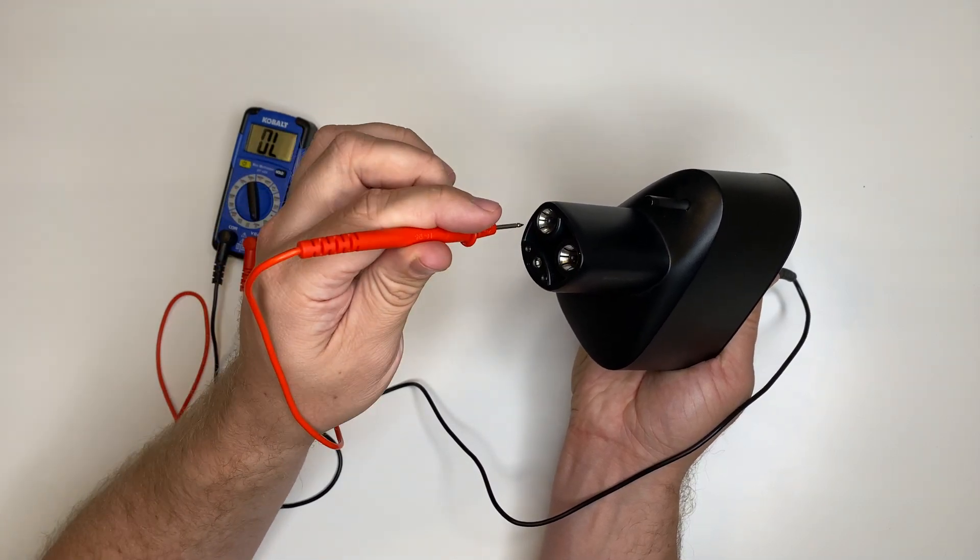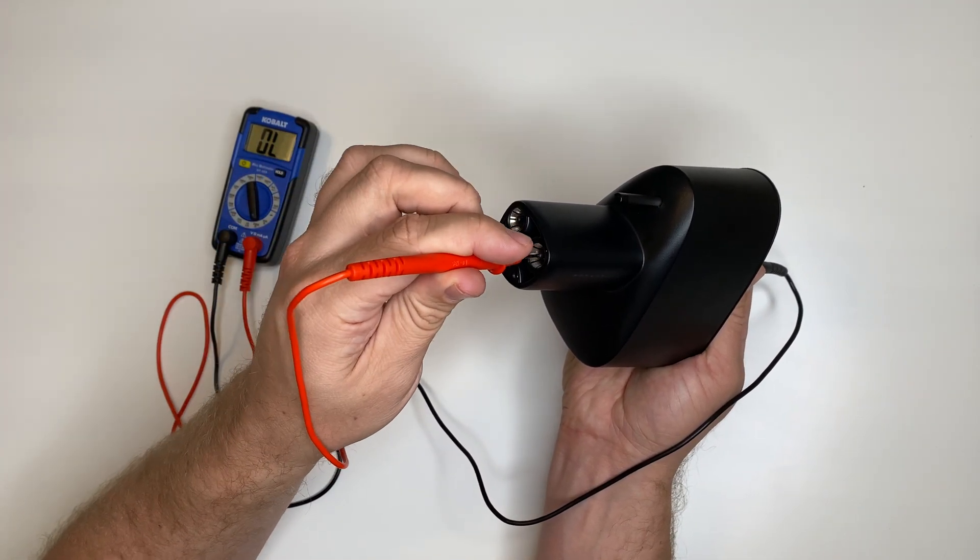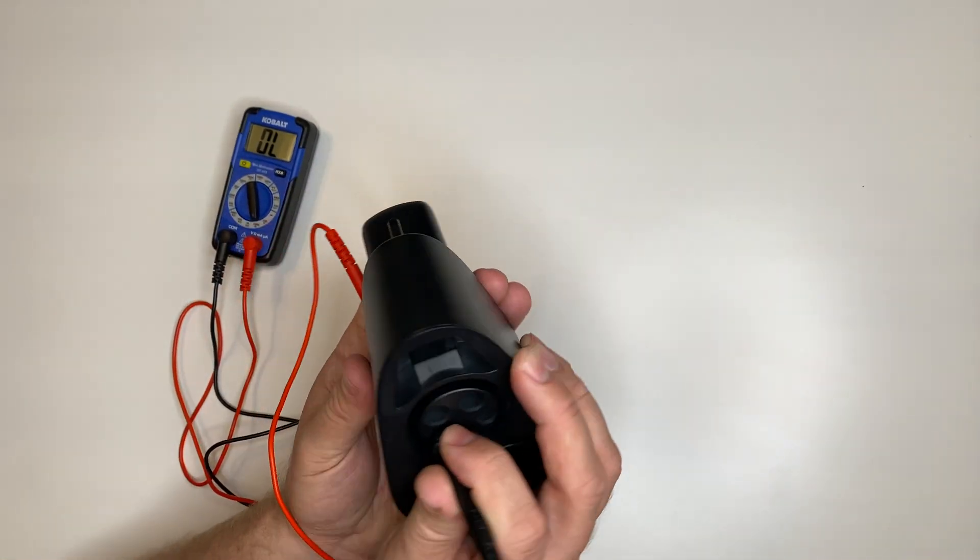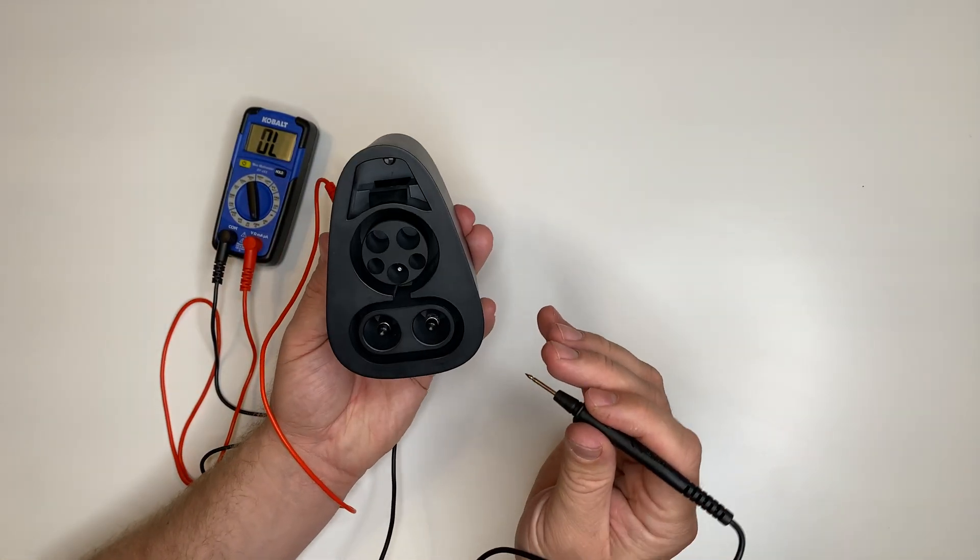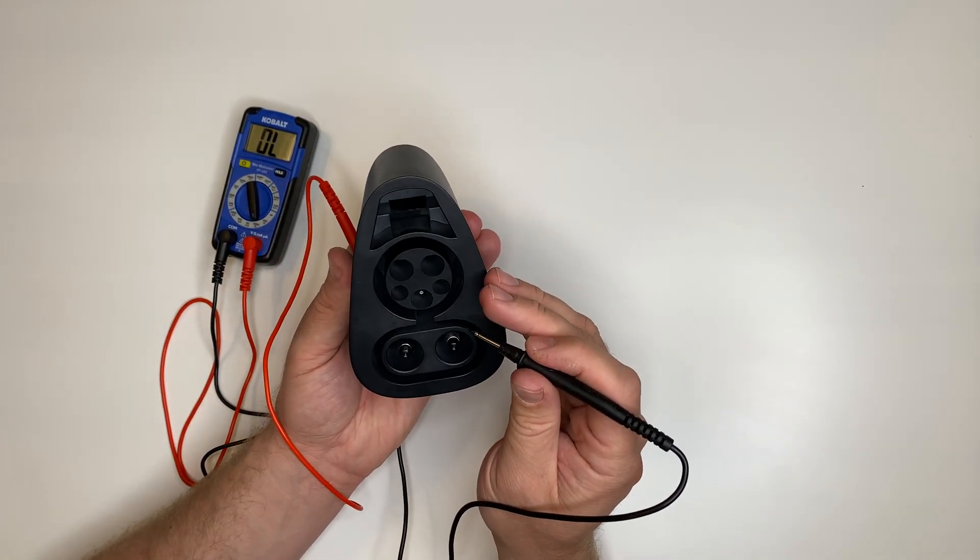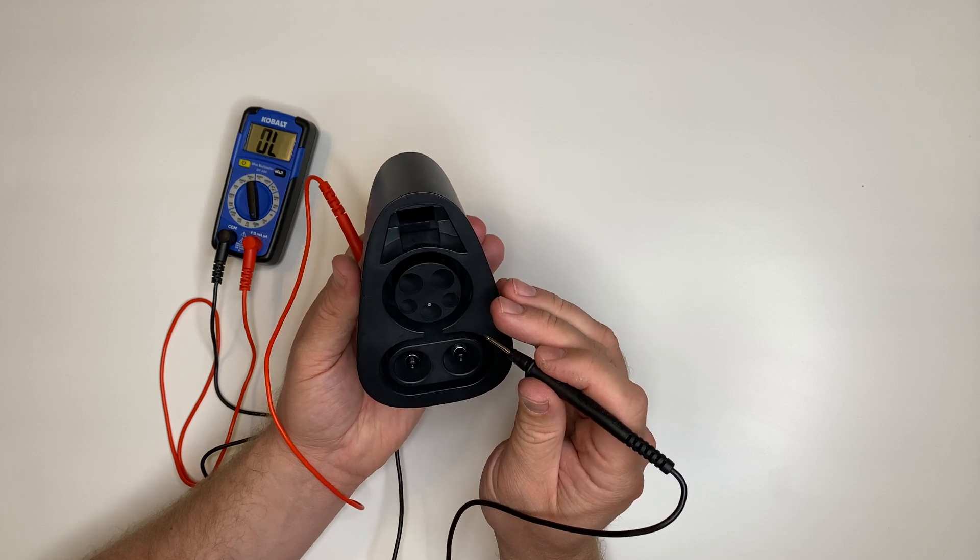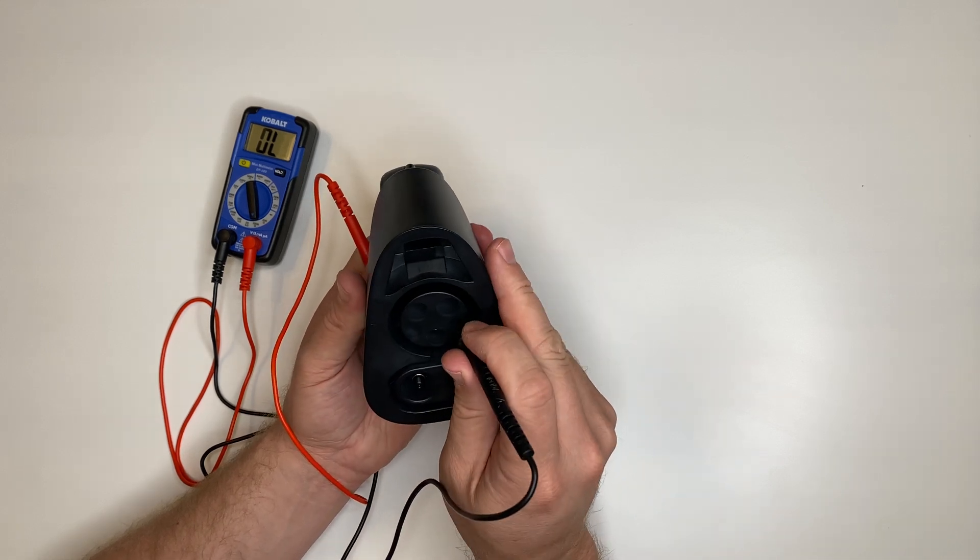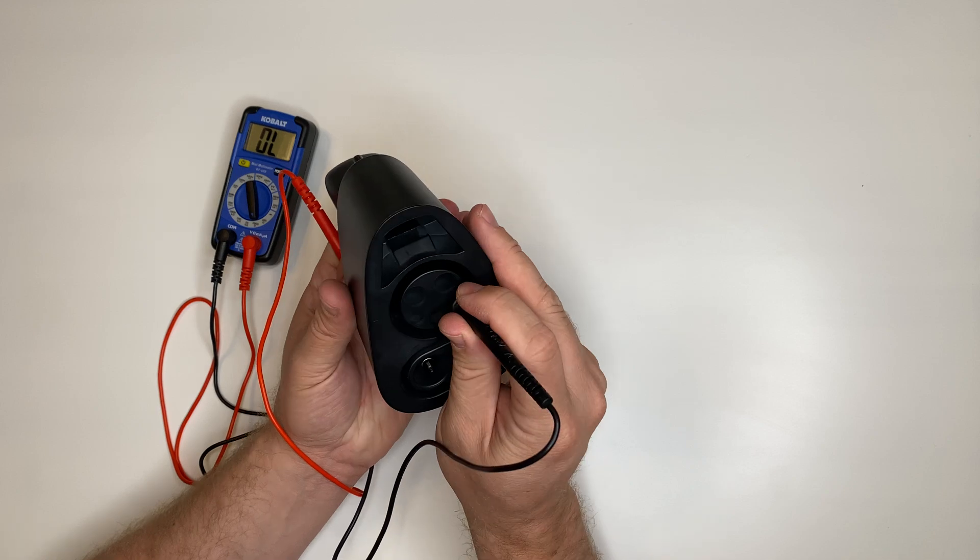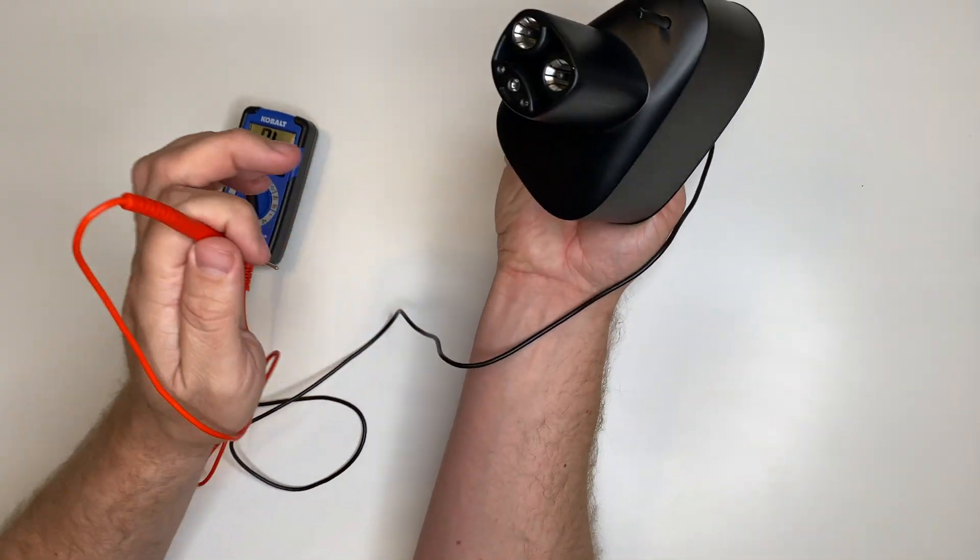We're going to repeat it again for contact 5, which is the control status or proximity pilot, which is here, repeating the same steps.